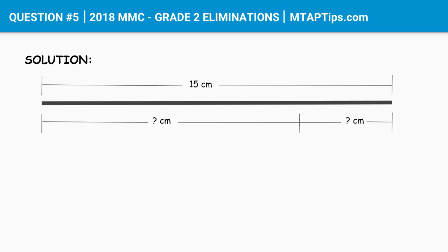We know that the square has 4 equal sides. So to find the biggest possible square that we can create from this 15 cm long rope, all we need to do is a simple division. 15 divided by 4 equals 3, with a remainder of 3 as well.